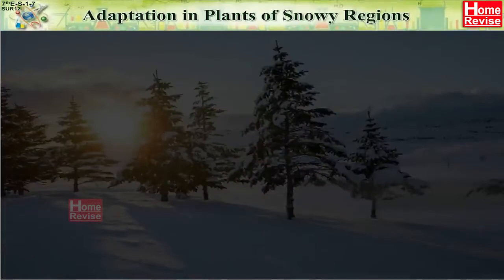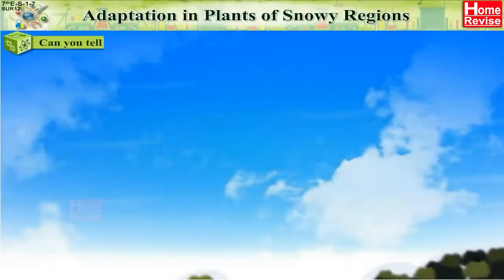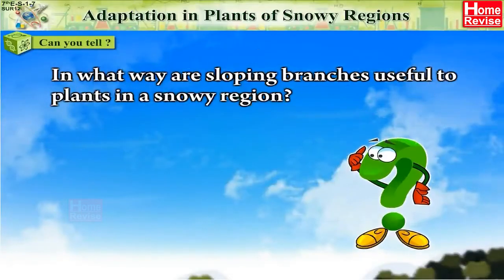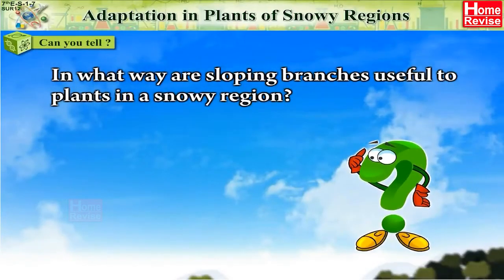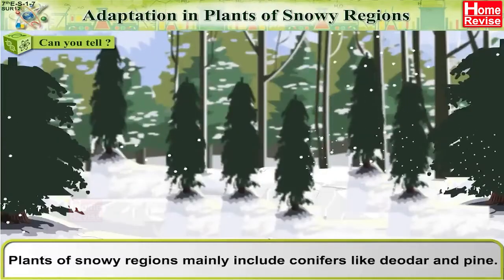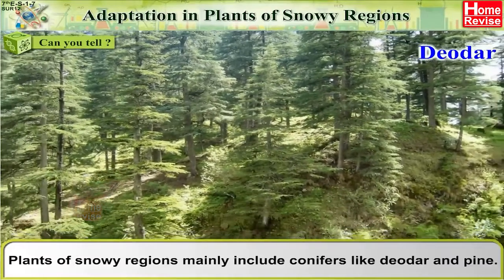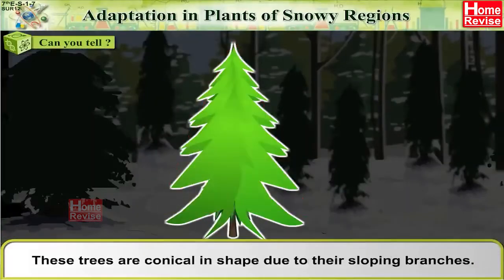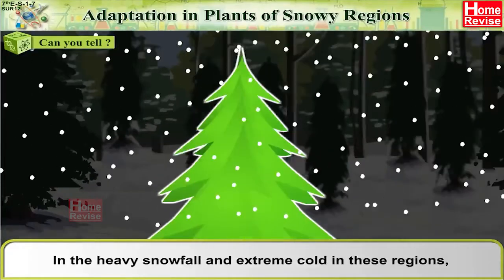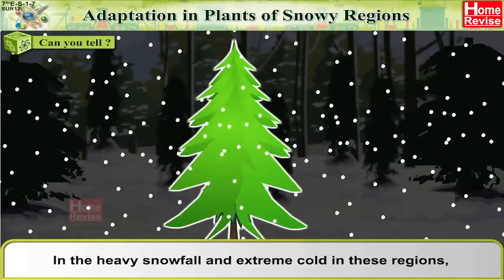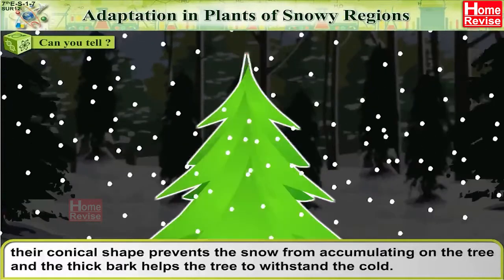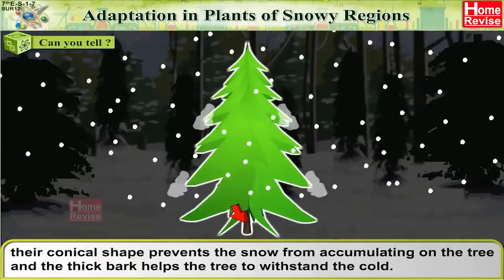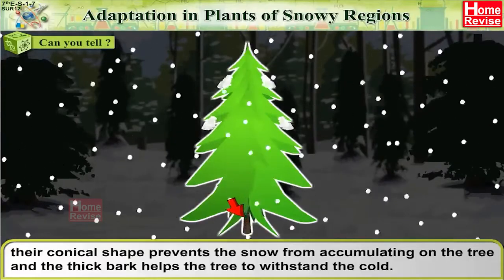Adaptation in Plants of Snowy Regions: Plants of snowy regions mainly include conifers like deodar and pine. These trees are conical in shape due to their sloping branches. In heavy snowfall and extreme cold, their conical shape prevents snow from accumulating on the tree, and the thick bark helps the tree to withstand the cold.